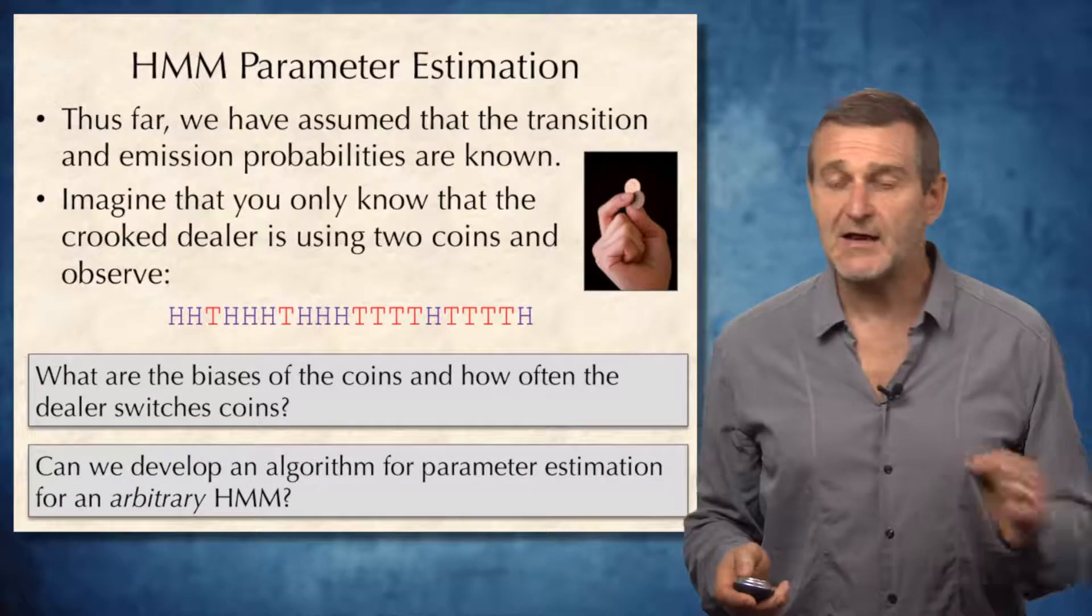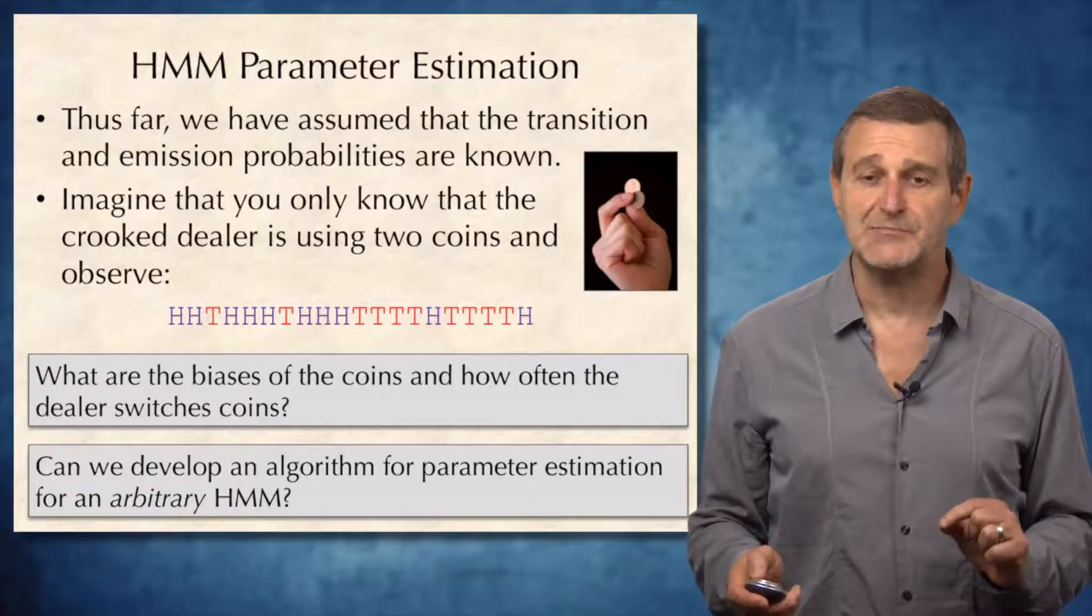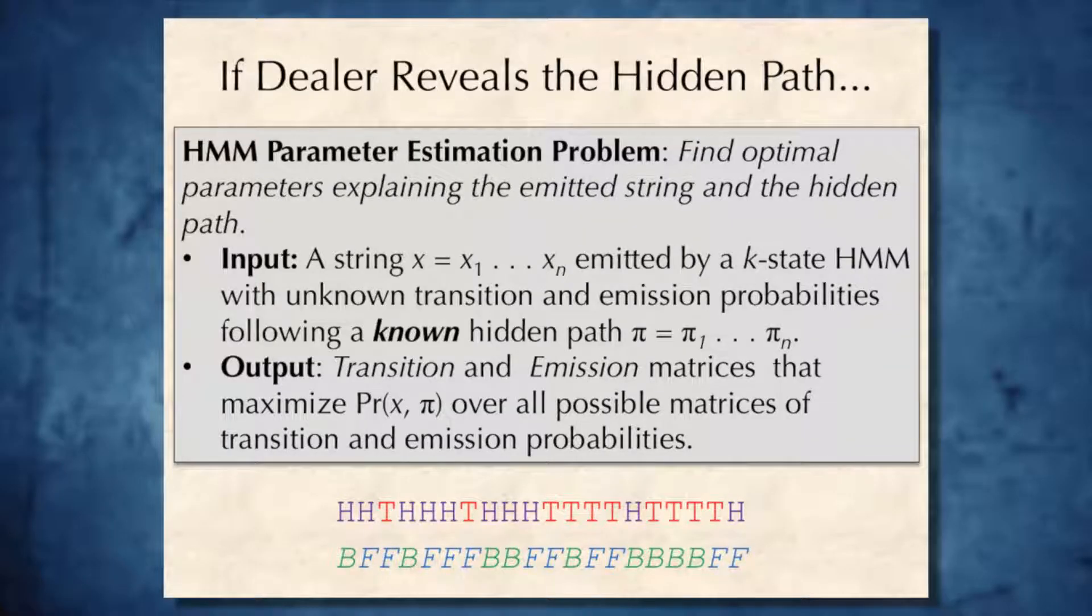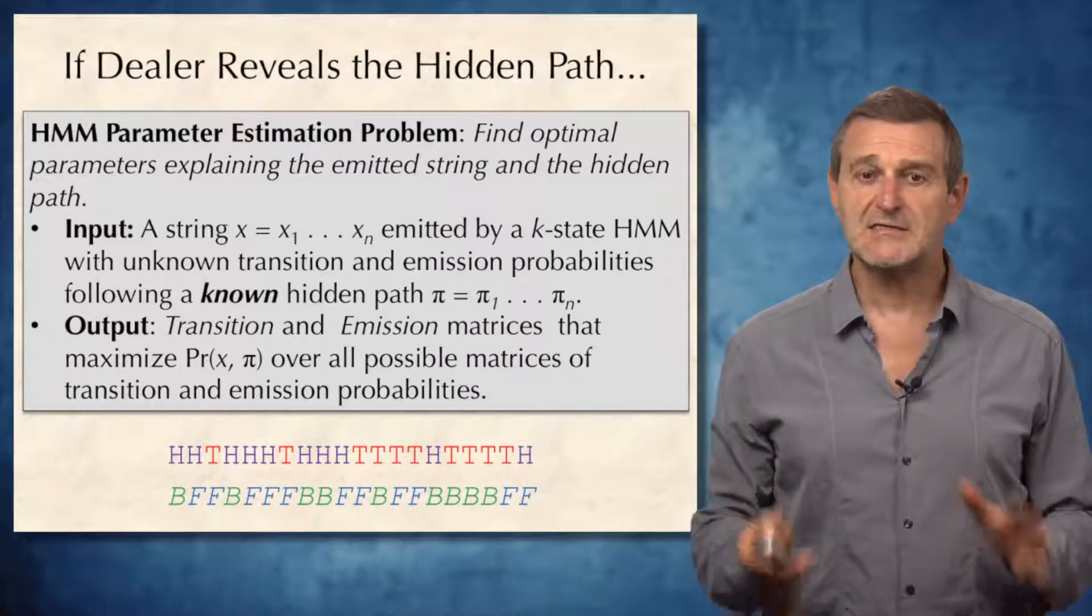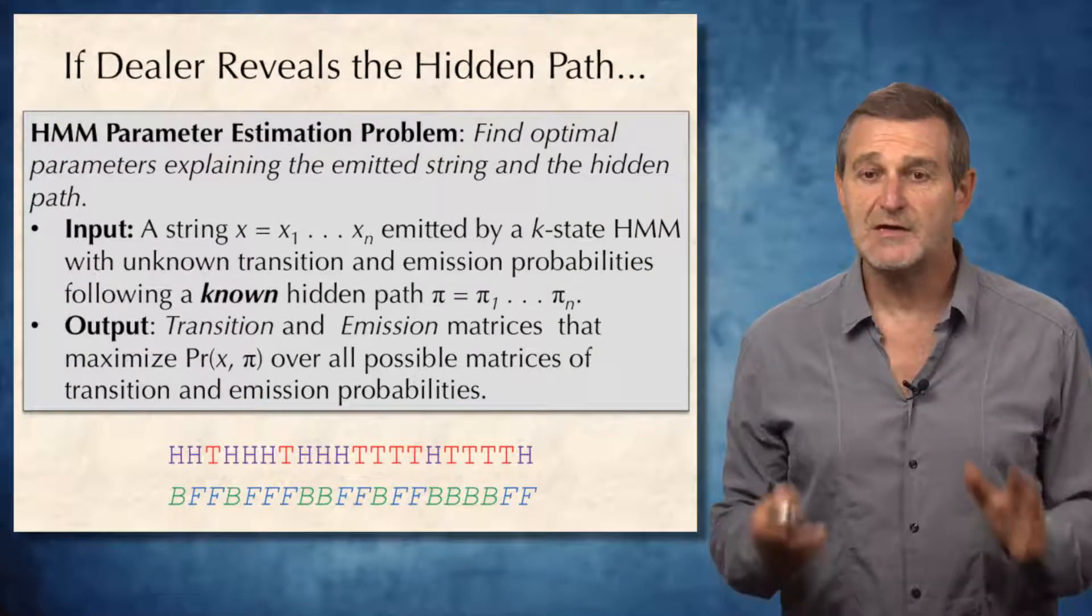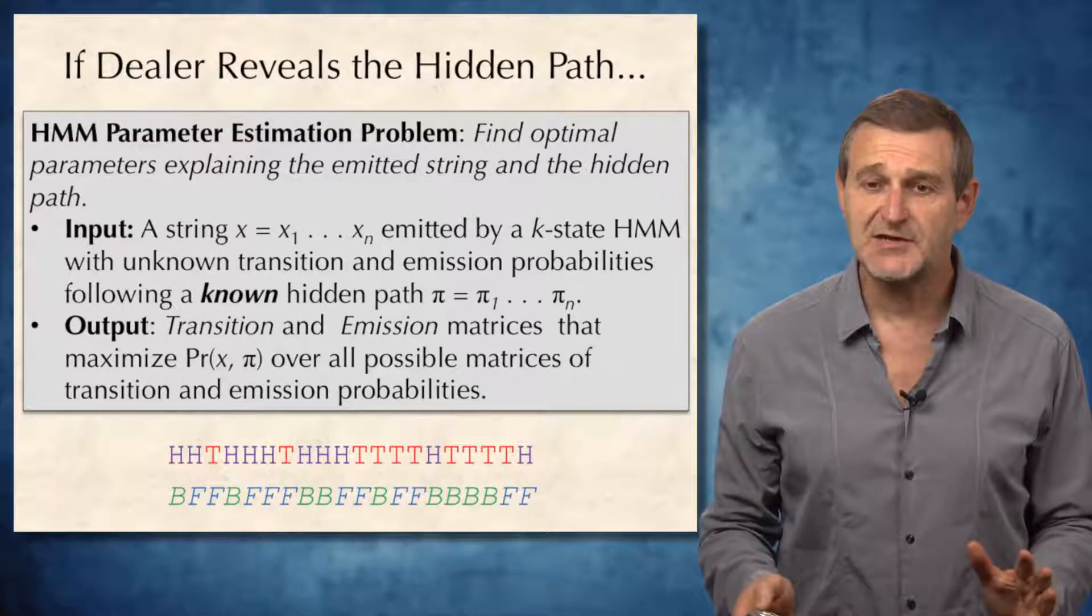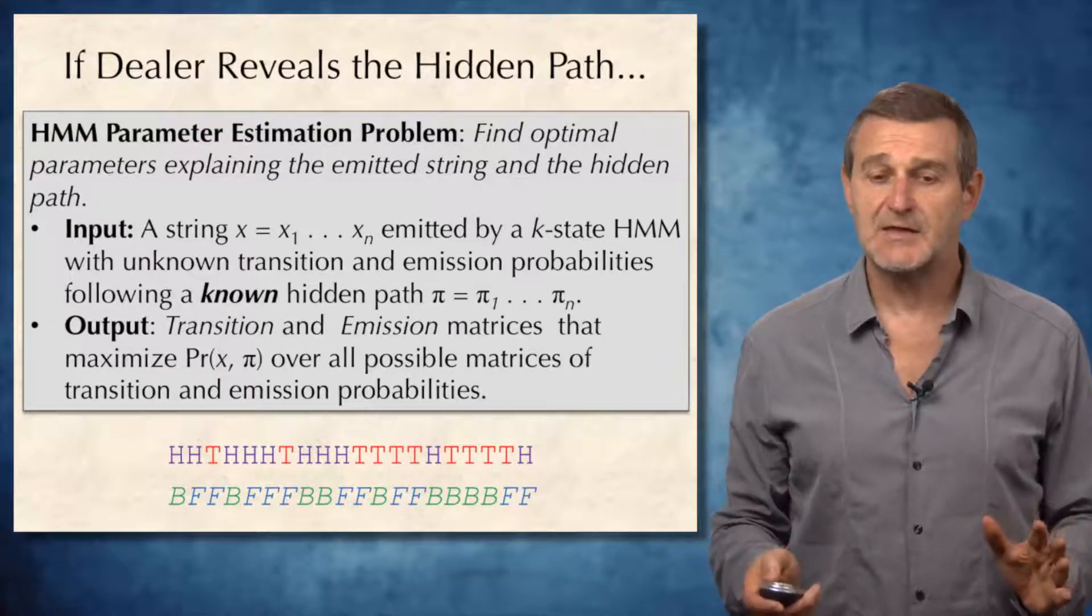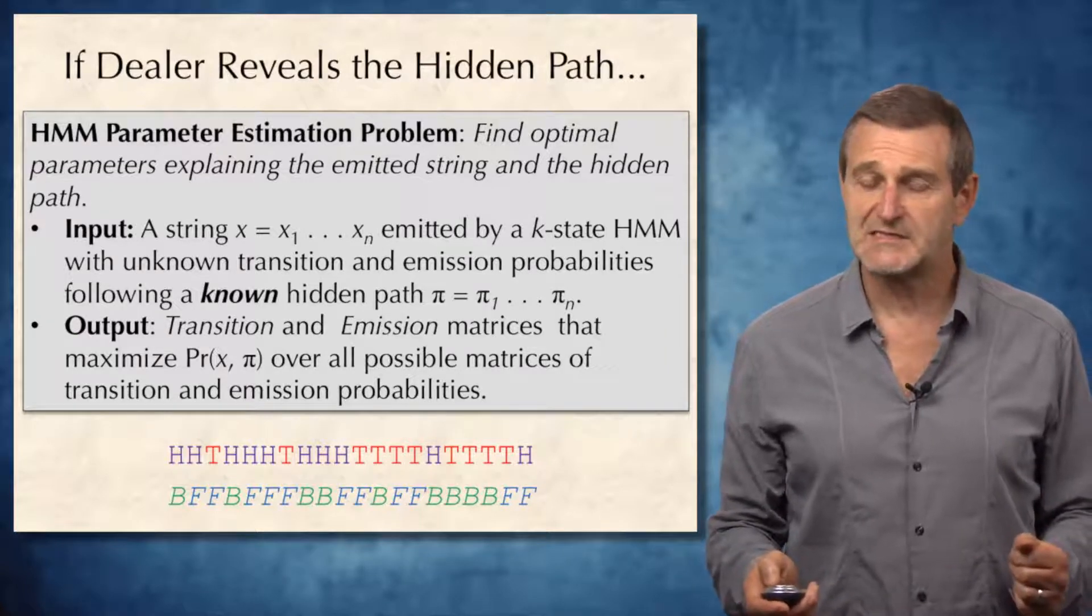Can we develop an algorithm for parameter estimation for an arbitrary HMM? Let's start answering this difficult question from the unlikely scenario when the dealer reveals what is the hidden path. In this case, we will face HMM parameter estimation problem: find optimal parameters explaining the emitted string and the hidden path. So hidden path and emitted string are given at the bottom of this slide.